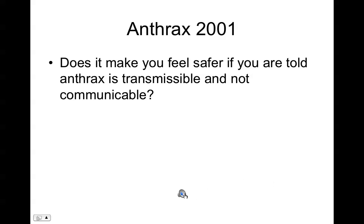In 2001, along the East Coast from New York down to Florida, there were several cases of anthrax. In the news, they reported that anthrax was transmissible and not communicable. With the more specific definitions we've just discussed, does it make you feel safer to know anthrax is a transmissible disease — transferred from an inanimate object to a person — versus a communicable disease that transfers from person to person?